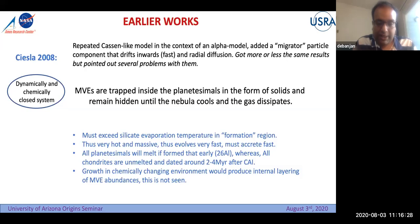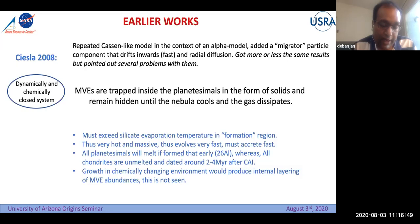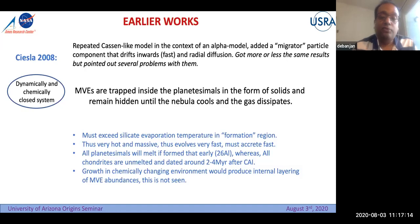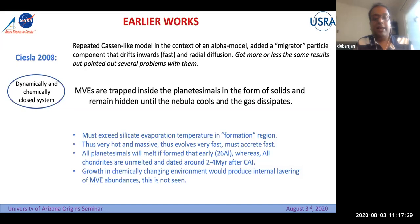Ciesla 2008 pointed out certain problems: if this scenario holds, planetesimal formation has to be very early, before 500,000 years. But the chondritic meteorites we are talking about show no evidence of melting, meaning they formed when the solar system was already depleted of aluminum-26. From age dating, these chondrites formed from 2 to 4 million years after the CIs were formed. So the problem is you have to form everything very early, which is in contrast with the meteoritic records we already have.